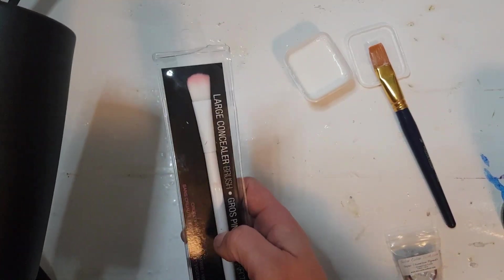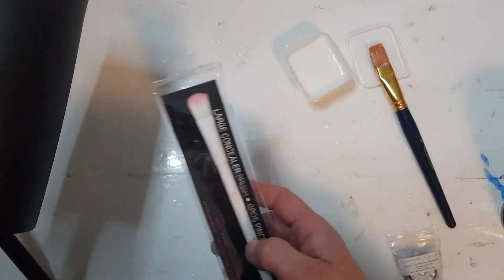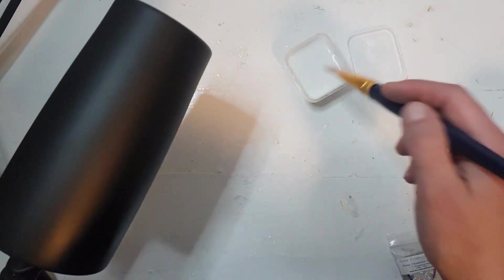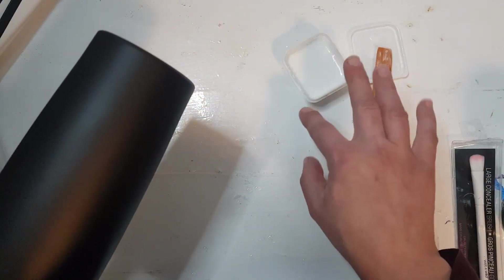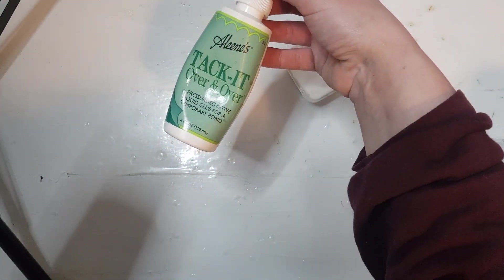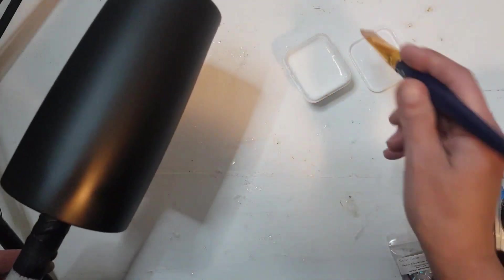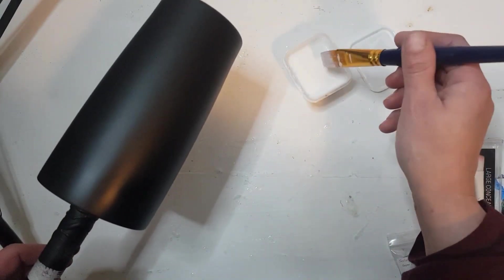I'm going to apply that with a makeup brush. I would normally use a bigger makeup brush but I don't have a clean one so I'm going to use a smaller one. But first I'm going to do a 50-50 Aileen's Tack It Over and Over again mixed with water. I'm going to do two coats of that.